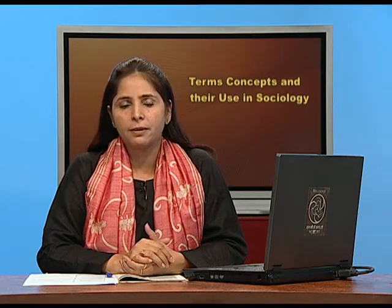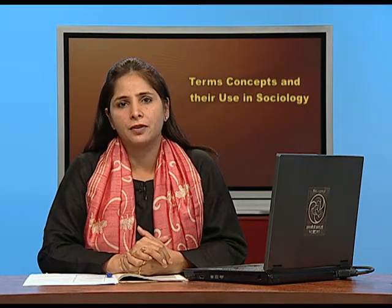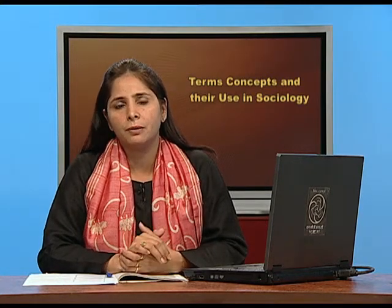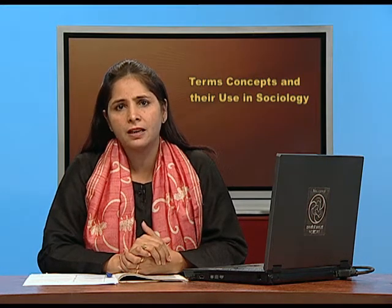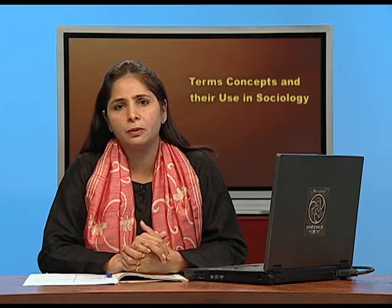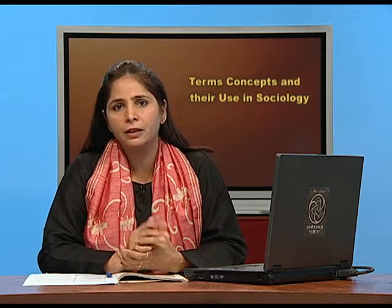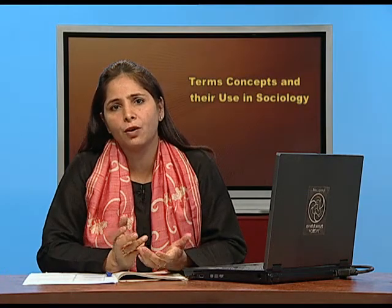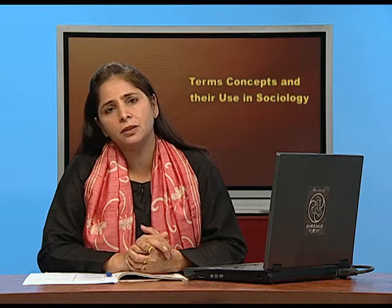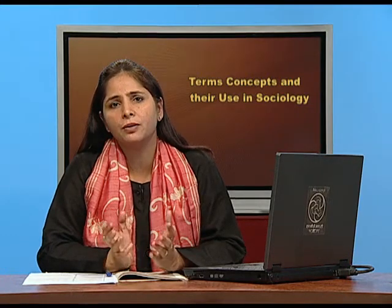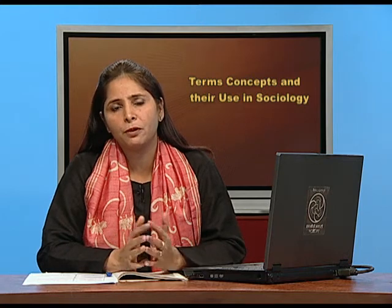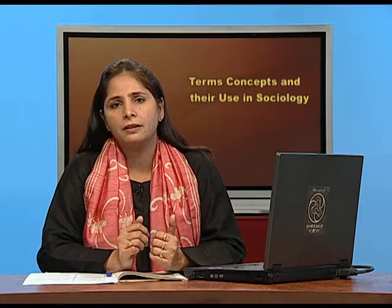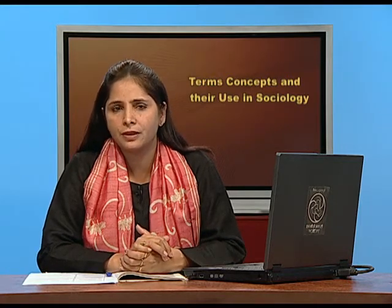According to Max Weber, social stratification can be understood through three major dimensions in society. First is class — the economic dimension, relating to how people earn and their income. Second is status — the social dimension, referring to the kind of status people occupy in society. Third is party — the political dimension. According to Weber, different groups can be formed in society along these three dimensions — this is how social stratification happens.